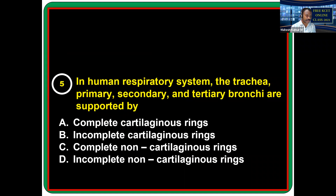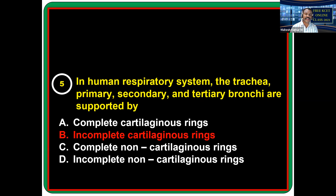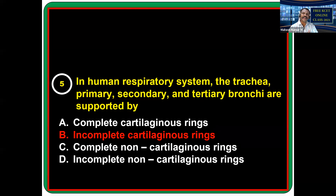In the human respiratory system, the trachea, primary, secondary, and tertiary bronchi are supported by incomplete cartilaginous rings — C-shaped rings. Comparatively, birds have complete ring-shaped cartilaginous structures. These rings prevent the collapsing of the respiratory structure.